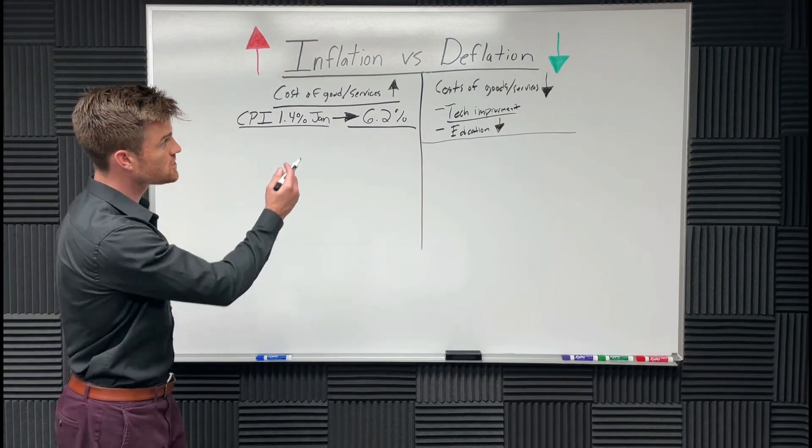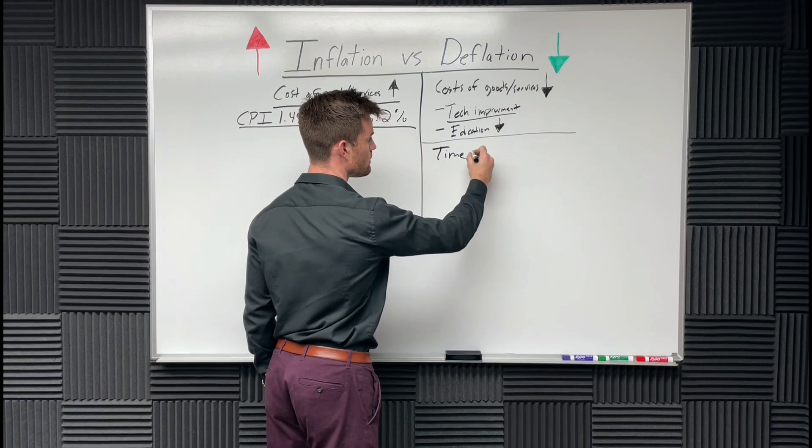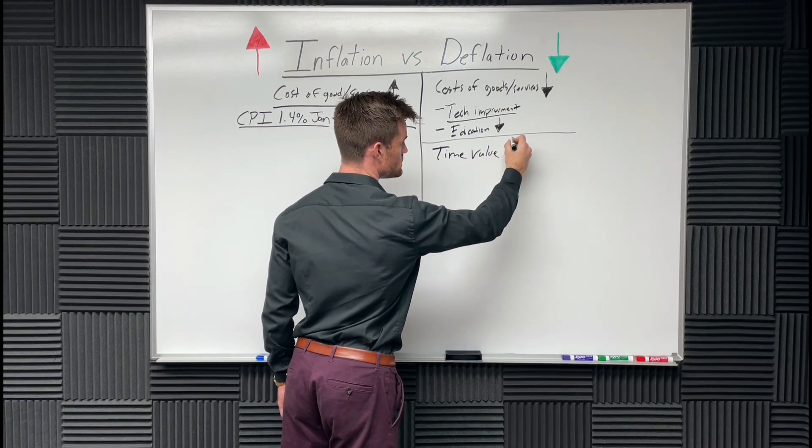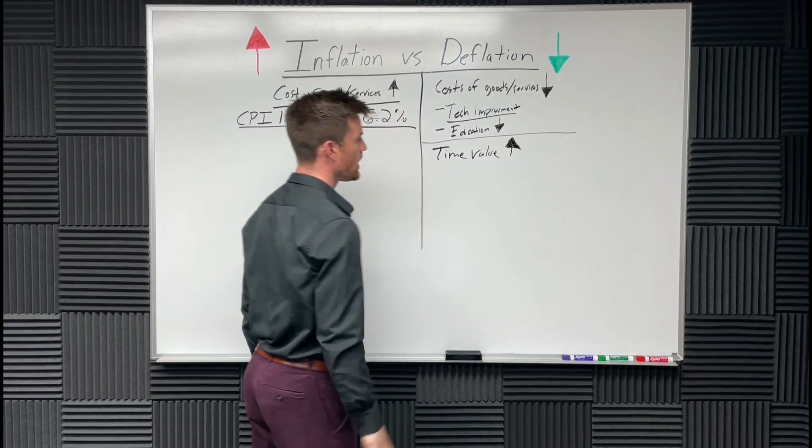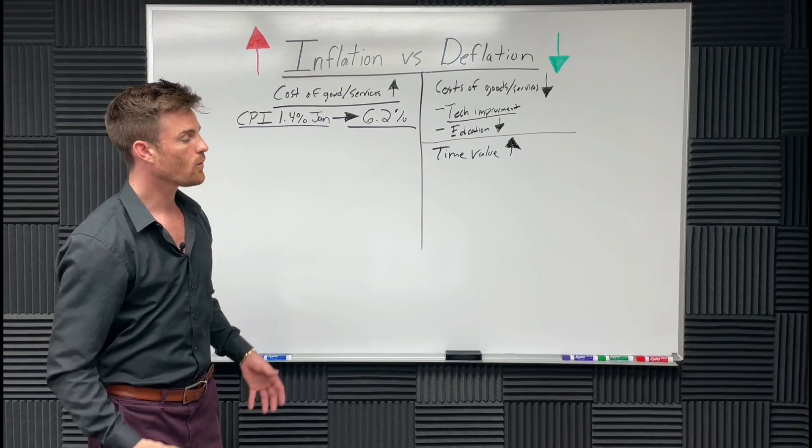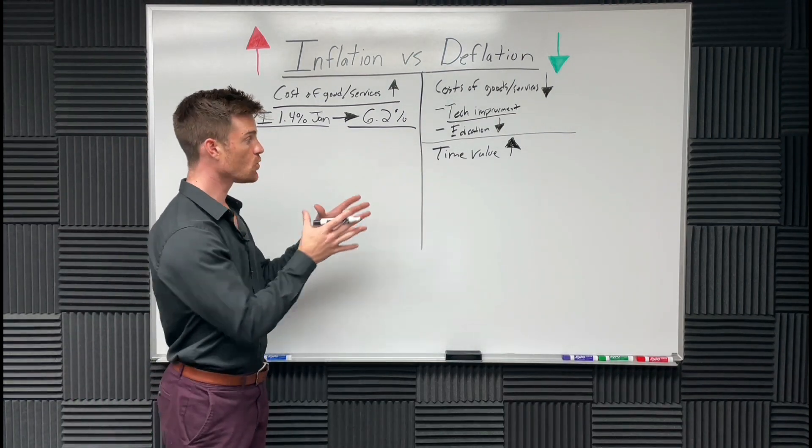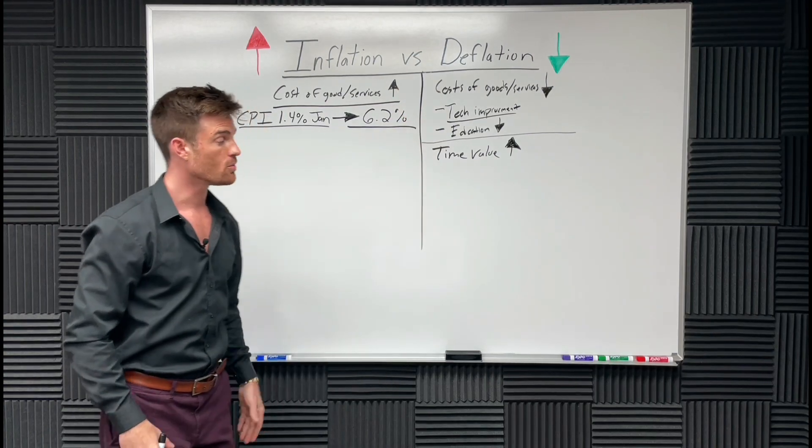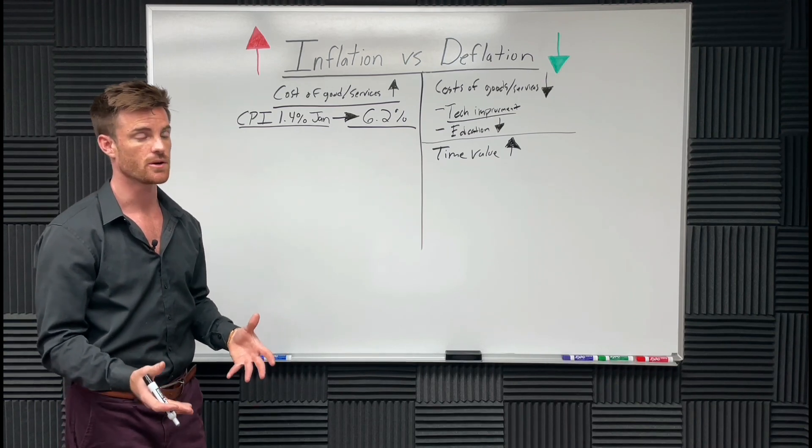In a deflationary world, you want your time value to go up. If I worked hard now and made a wage now, I want to store that money in a place where my time is stored and it's going up in value. That's a deflationary world, if you put your money in a deflationary place. There's only a few places to choose in a deflationary world.